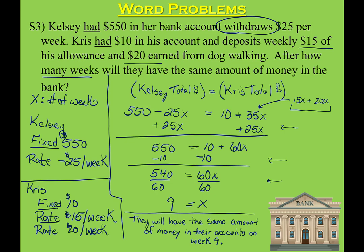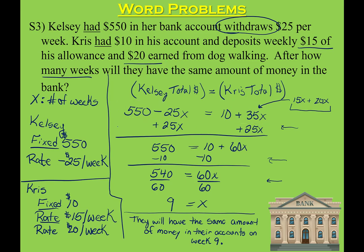In this lesson we learned how to solve equations where there are variables on both sides of the equal sign. We do that by using opposite operations in order to get the variables to be on the same side, and then after that we just solve the equations as normal. This completes the lesson — you are now ready to begin the homework.